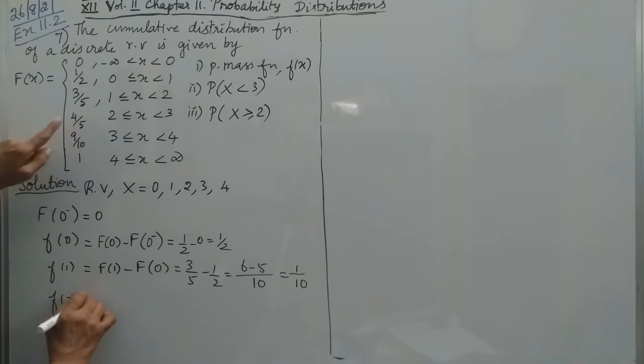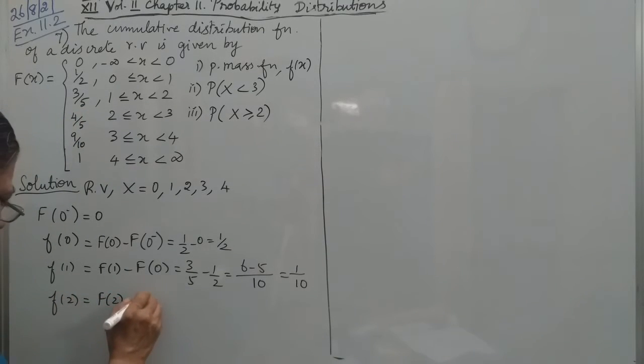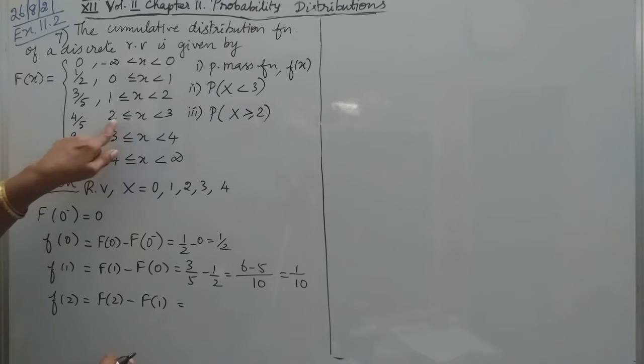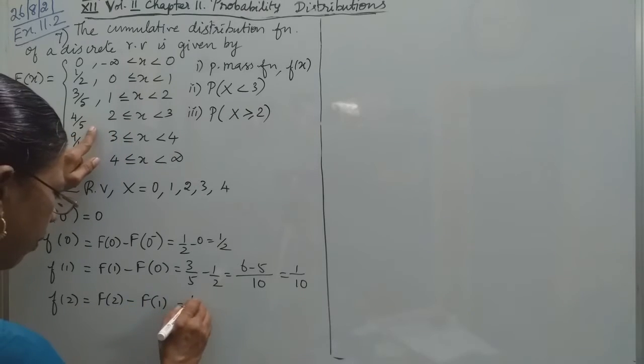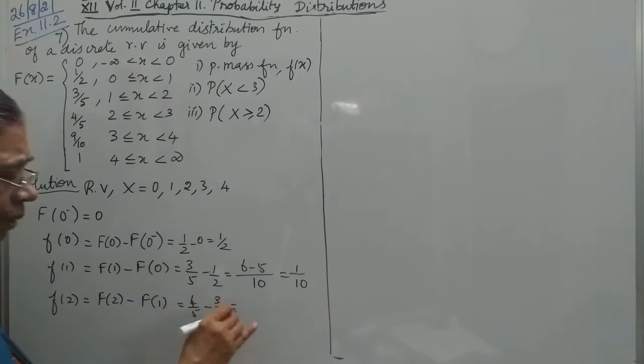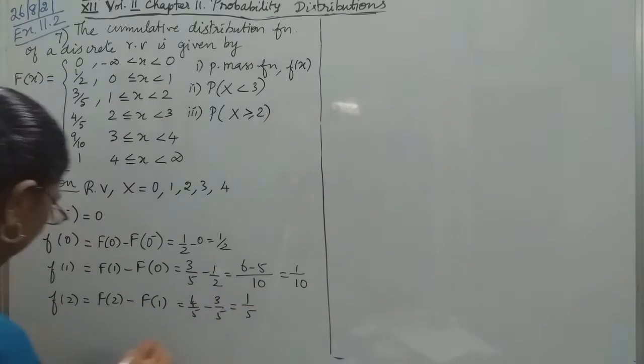Next, f(2), small f(2), capital F(2) minus capital F(1). So capital F(2), 1 is included, so f(2) is 4/5 minus 3/5, which equals 1/5.